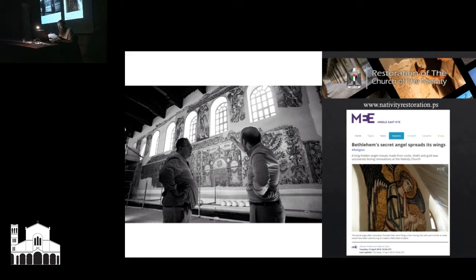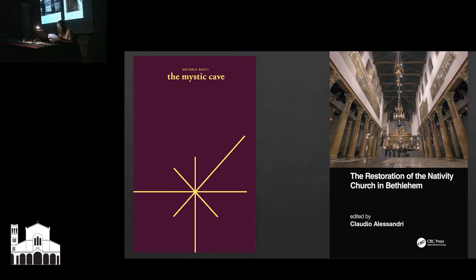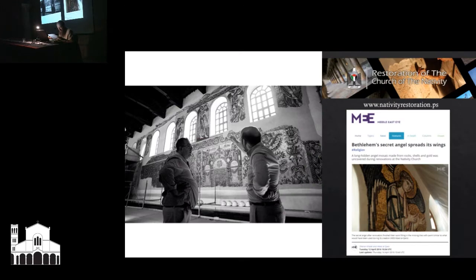It was de facto impossible to make repairs and introduce new decors. The stalemate froze the place in its mid-19th century state. Almost nothing has been significantly changed since then up to 2010, despite serious damage to the roof which caused the church to be flooded with water during rainy days. The restoration works not only prevented the building from the serious risks which had motivated its inscription in the UNESCO List of World Heritage in Danger, but also enabled us to significantly improve our knowledge of its history and art.